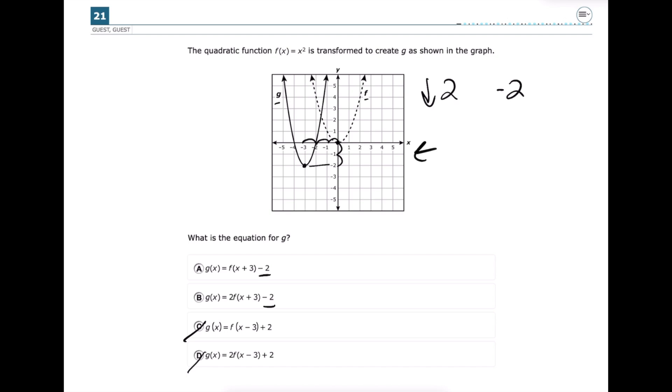So we went left 3, and with transformations, left and right is actually backwards from what you would think. So you would think that since you went left 3 and that value got more negative, that it would be minus 3, but it's actually going to be the opposite. So inside of parentheses, we're going to look for x plus 3, and we get that with both letter a and b.